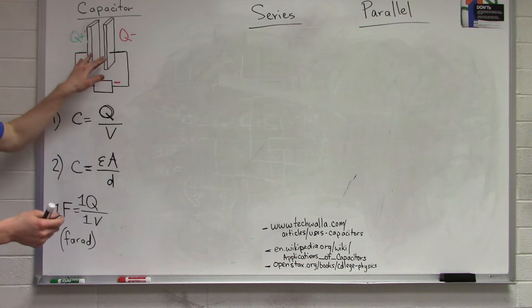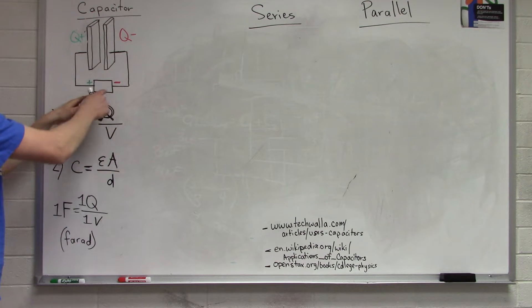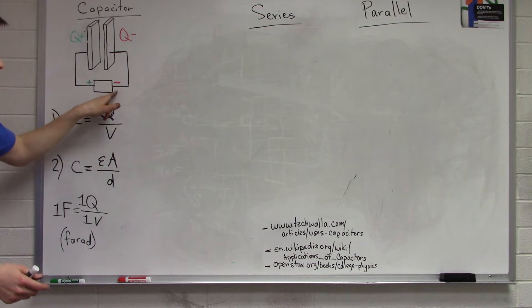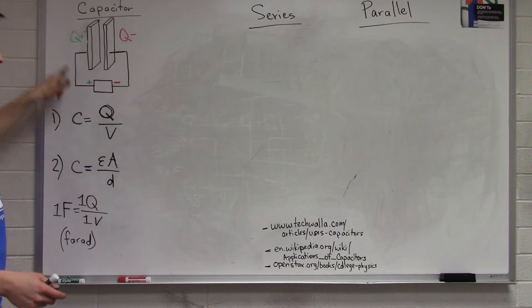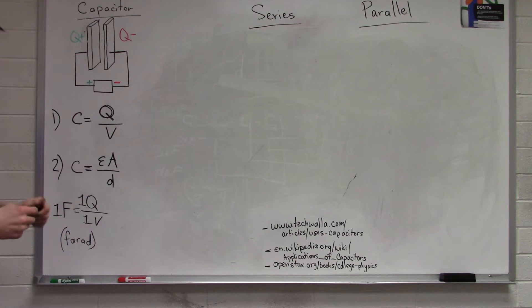A capacitor is two conducting plates separated by some distance but connected to the same power source. This creates a separation of charge so that on one side you get a net negative charge and on the other we get a net positive charge. This is a useful way to store charge.